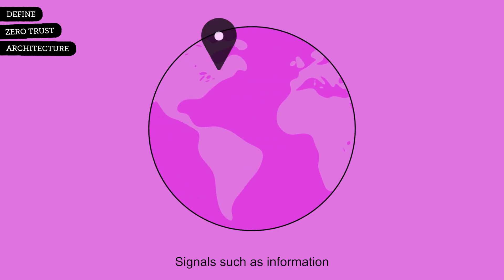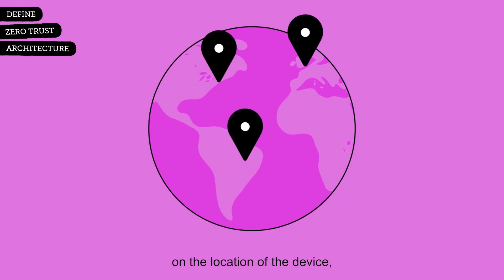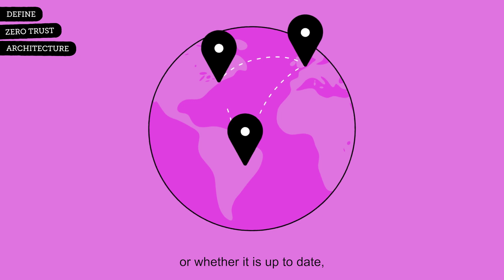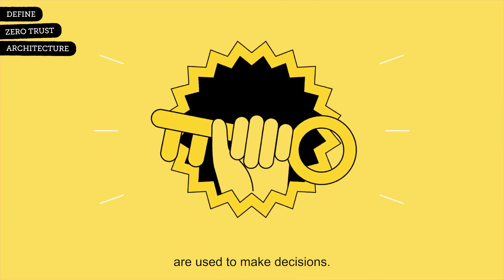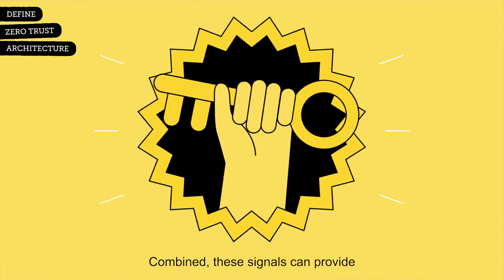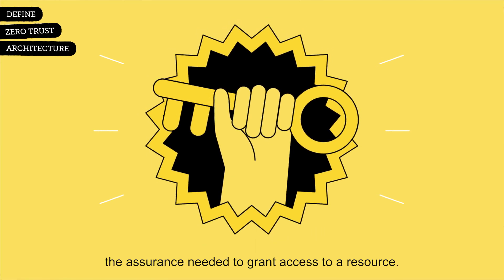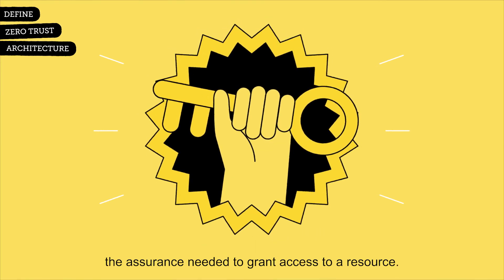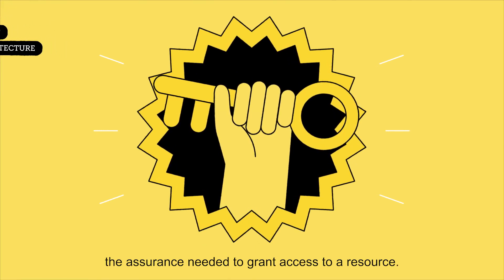Signals, such as information on the location of the device or whether it is up to date, are used to make decisions. Combined, these signals can provide the assurance needed to grant access to a resource.